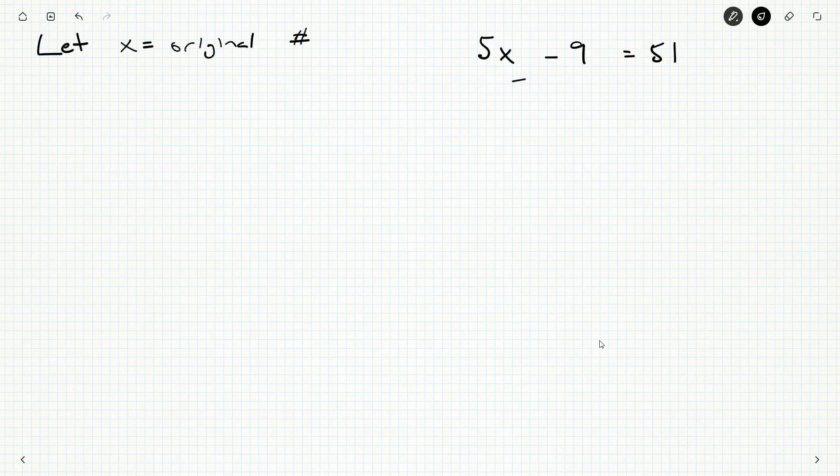Okay, well let's just undo everything and figure out what x equals. So we'll bring the nine over to the other side. 51 plus nine is 60 and then we'll divide it by five on both sides. 60 divided by five is 12.